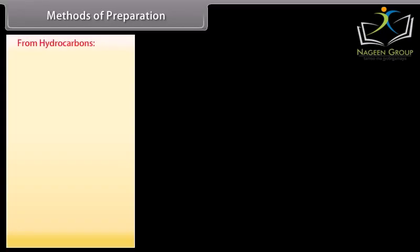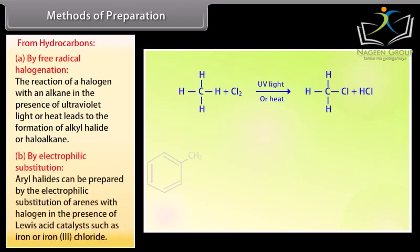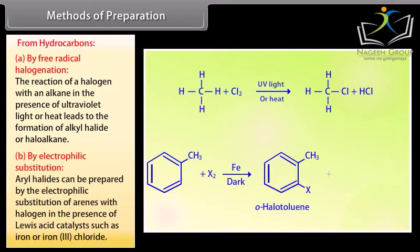Methods of Preparation from hydrocarbons. By free radical halogenation: the reaction of a halogen with an alkane in the presence of ultraviolet light or heat leads to the formation of an alkyl halide or haloalkane. By electrophilic substitution: aryl halides can be prepared by the electrophilic substitution of arenes with a halogen in the presence of Lewis acid catalysts such as iron or iron(III) chloride.